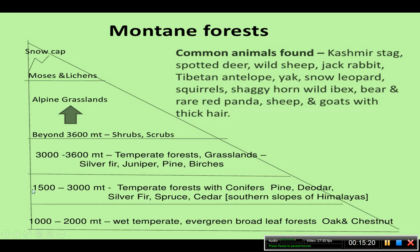When the height reaches 1500 to 3000 meters, there are temperate forests with coniferous trees — pine, silver fir, spruce, and cedar. This is commonly found on the southern slopes of the Himalayas, which face towards India.